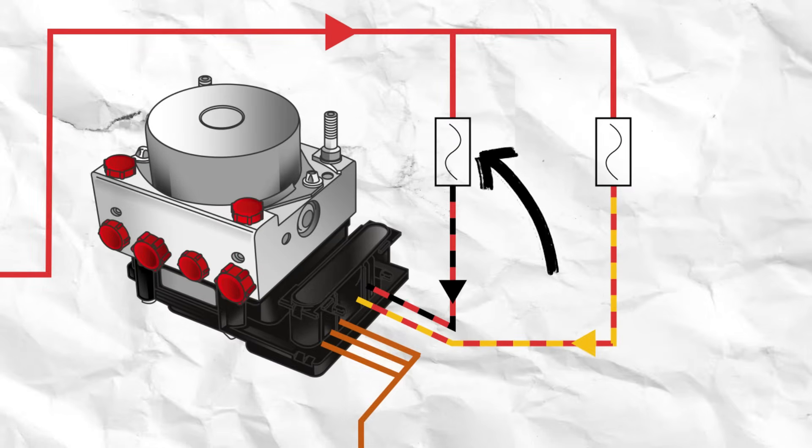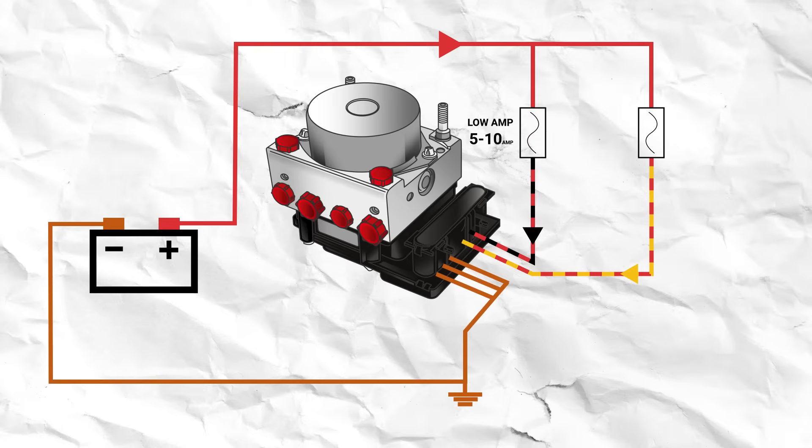One will be the main supply, which powers the module and its operations. This will be a low amp fuse rated between 5 to 10 amp, depending on the ABS design. And when this fuse is at fault, we often see no communications to the ABS system.